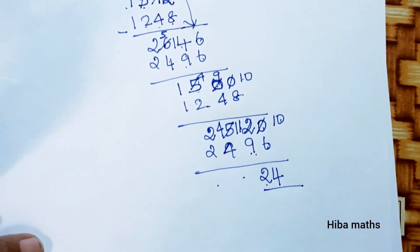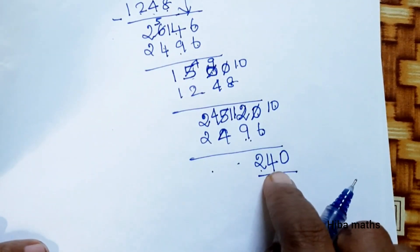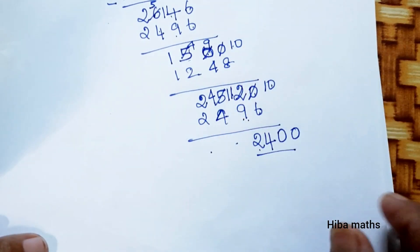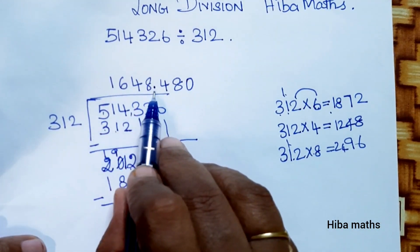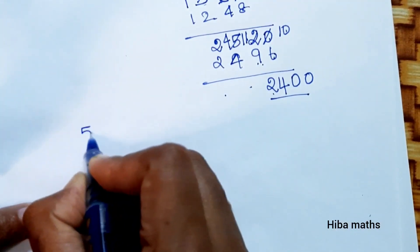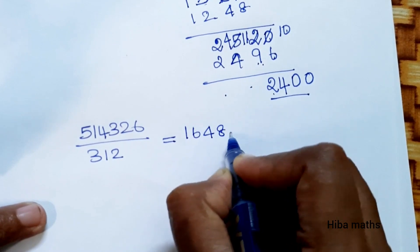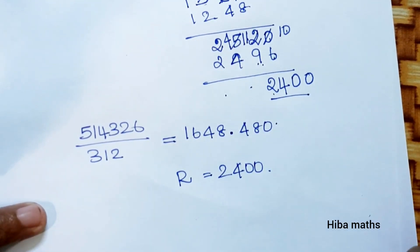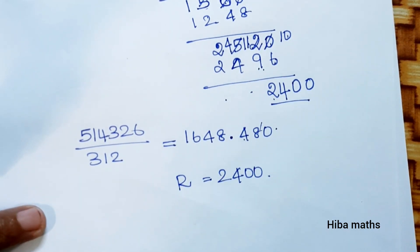Now you have 24. 24 is equal to 300, so the number is 0. And 240 versus 312, so the point is 0. If you add 0, you can add 0 — that means you can divide. The answer is 1648.480. 514326 divided by 312 is equal to 1648.480. This is the quotient and the remainder is 2400. If you have doubts about the sums, you have to comment. In the next video I will solve this. Thank you so much for watching.